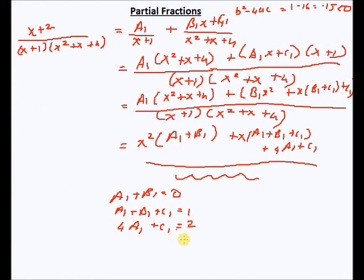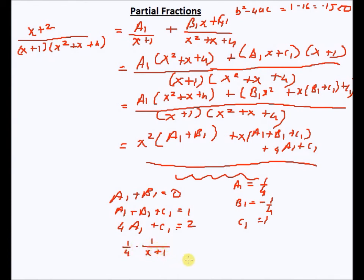Solving this system gives a1 = 1/4. Since a1+b1 = 0, we get b1 = -1/4. And c1 = 1. So the partial fraction expansion is (1/4)·(1/(x+1)) + (-x/4 + 1)/(x²+x+4). You can simplify further if you want, but that is the partial fraction expansion.